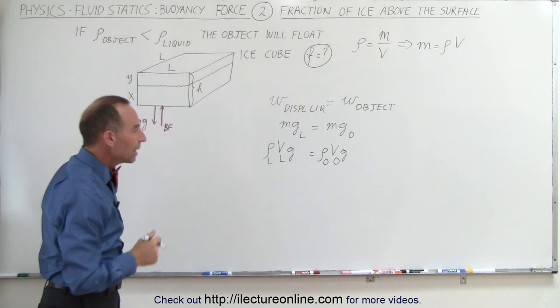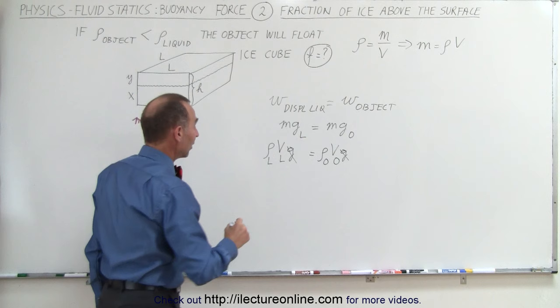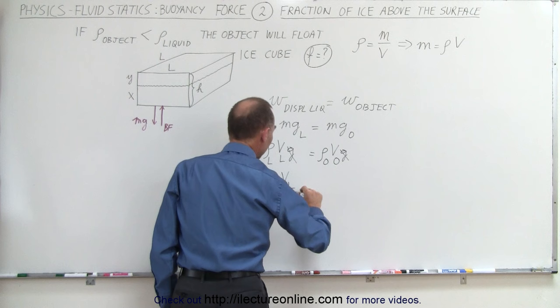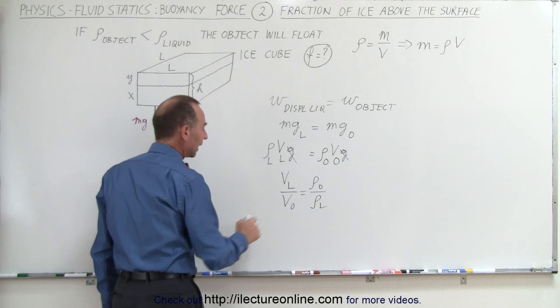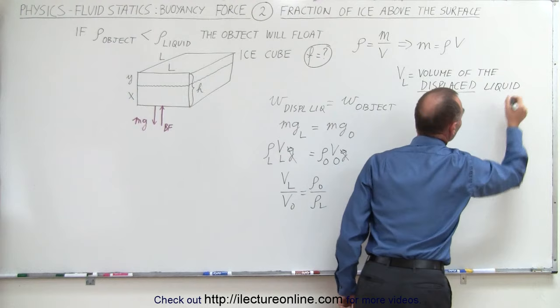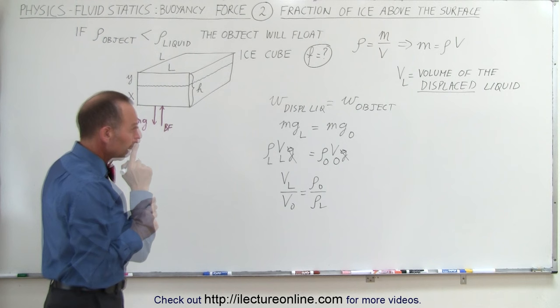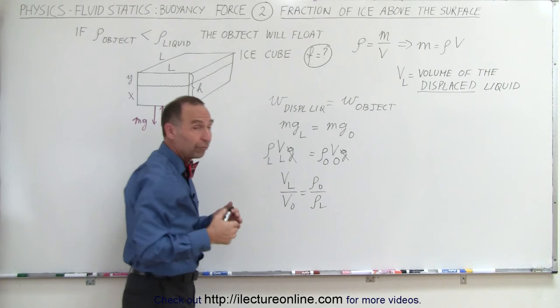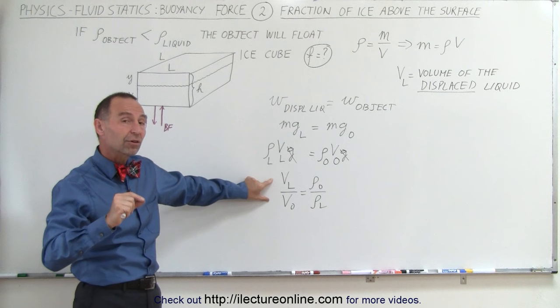The g's cancel out, and we can rearrange to get: the volume of the displaced liquid divided by the volume of the object equals the density of the object divided by the density of the liquid. Here, V_sub_l is the volume of the displaced liquid, which equals the volume of the portion of the object that is below the surface of the liquid. So this ratio is the fraction of the object that is below the surface.